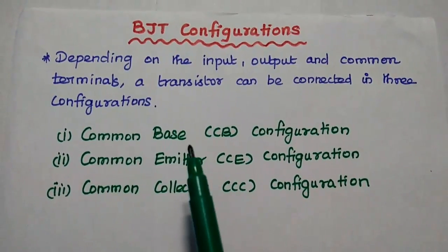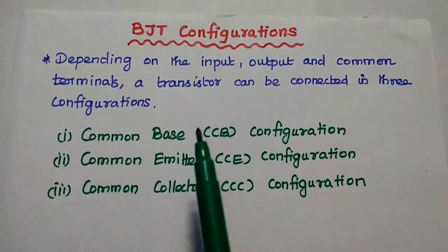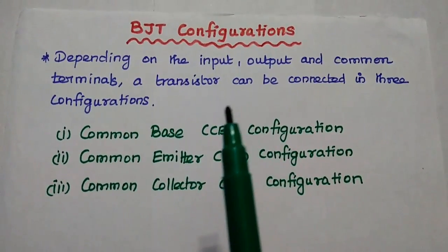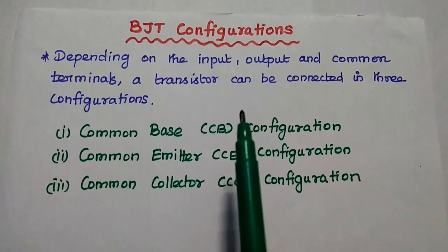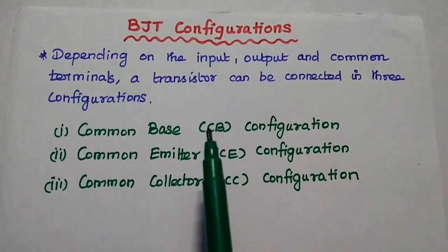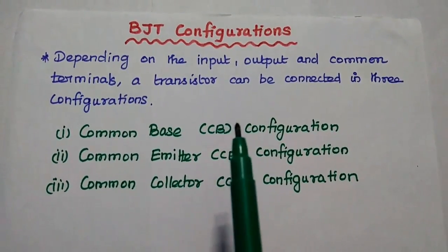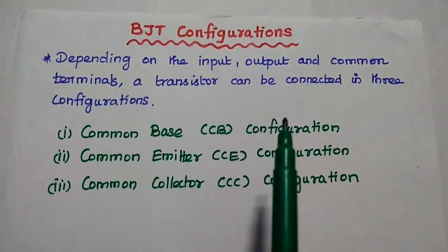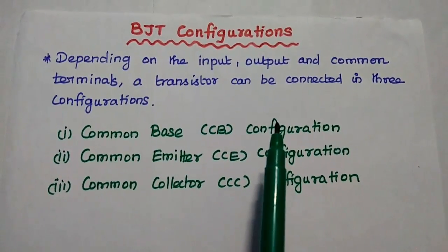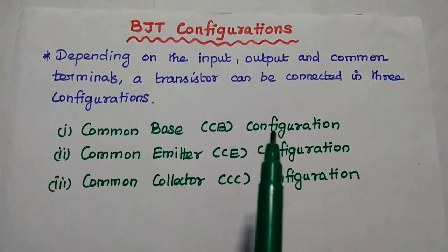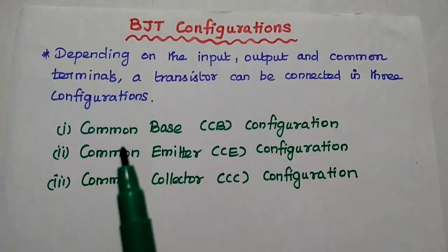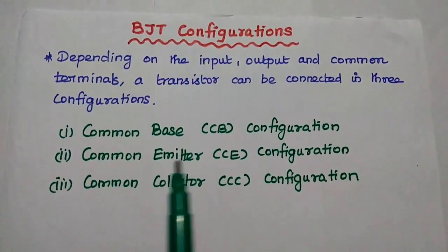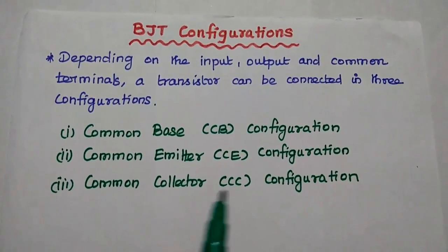Dear students, now we are going to discuss BJT configurations and their comparison in detail. A bipolar junction transistor is a three terminal semiconductor device. The three terminals are emitter, base, and collector. Depending on the input, output, and common terminals, the transistor can be connected in any one of three configurations: common base, common emitter, and common collector configuration.